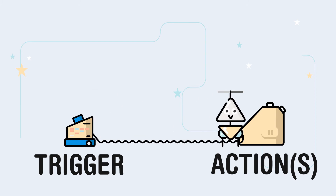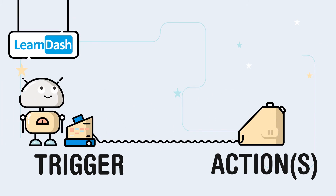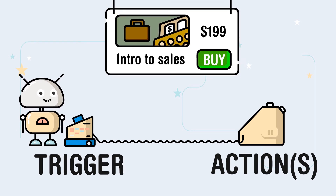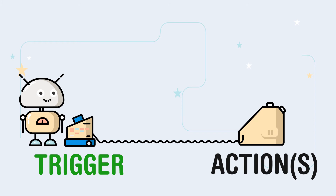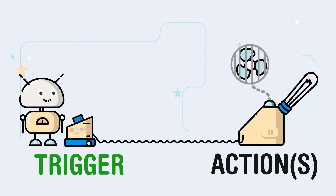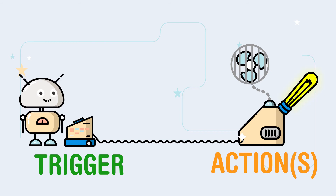Let's say you're using a learning management plugin like LearnDash or Lifter LMS. When your user passes your Intro to Sales course, you want to automatically add the user to a new BuddyPress group for graduates, enroll them in the next course, and send them a congratulations email. Those are actions — things that happen as a result of the trigger.